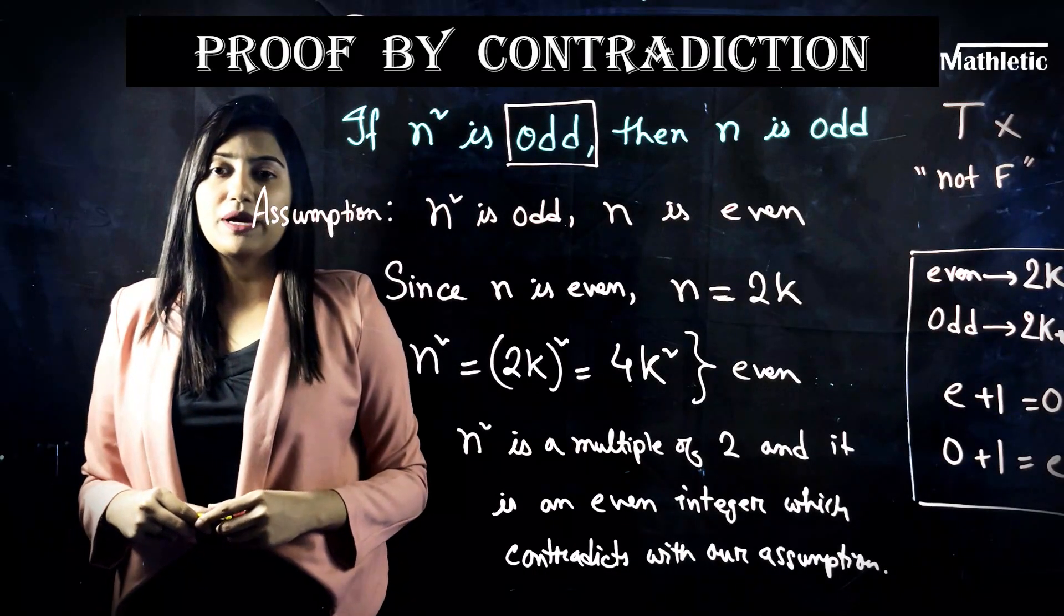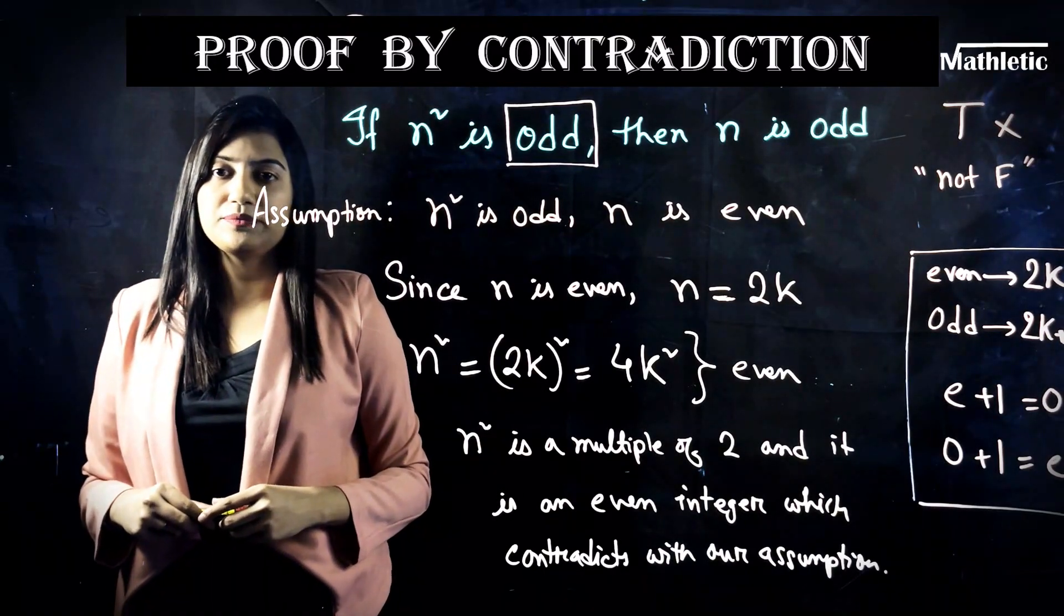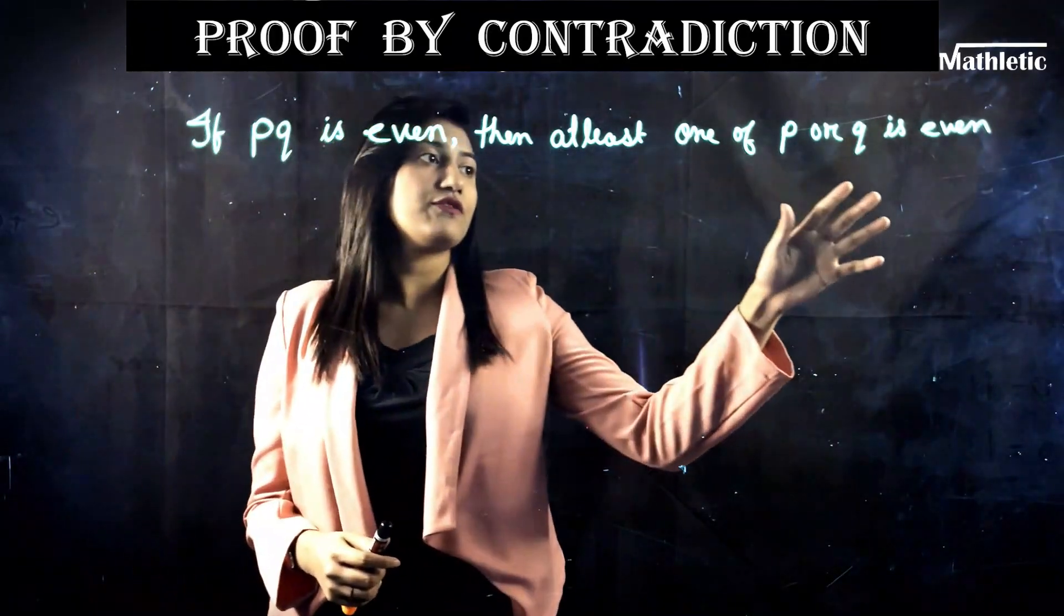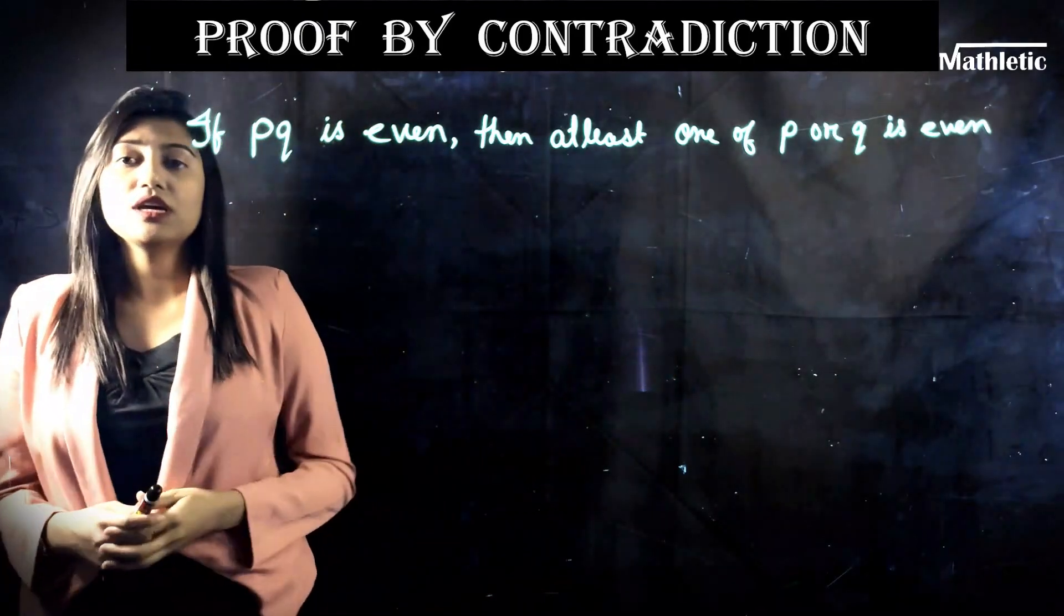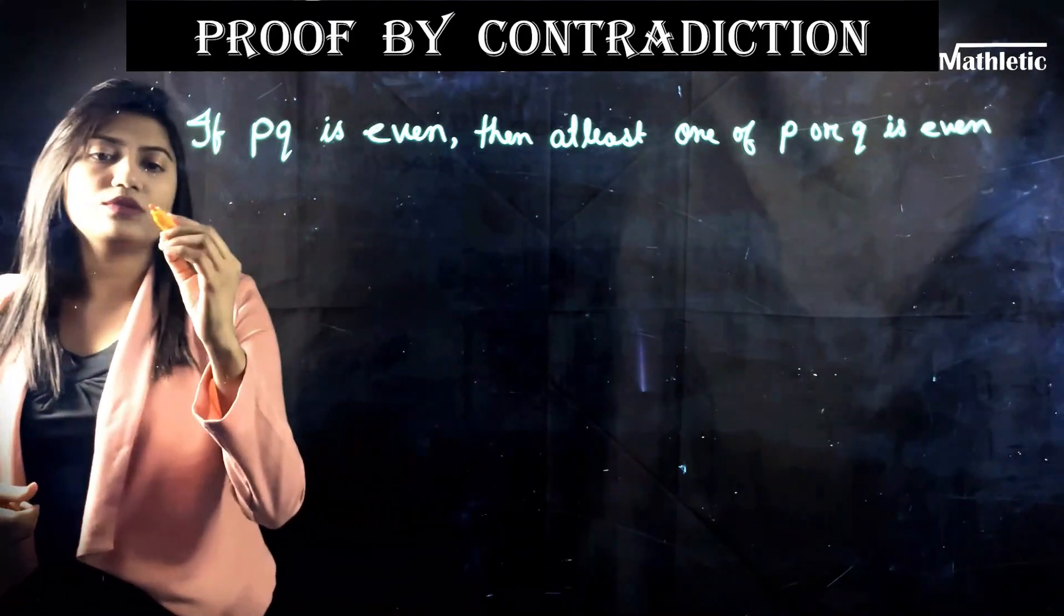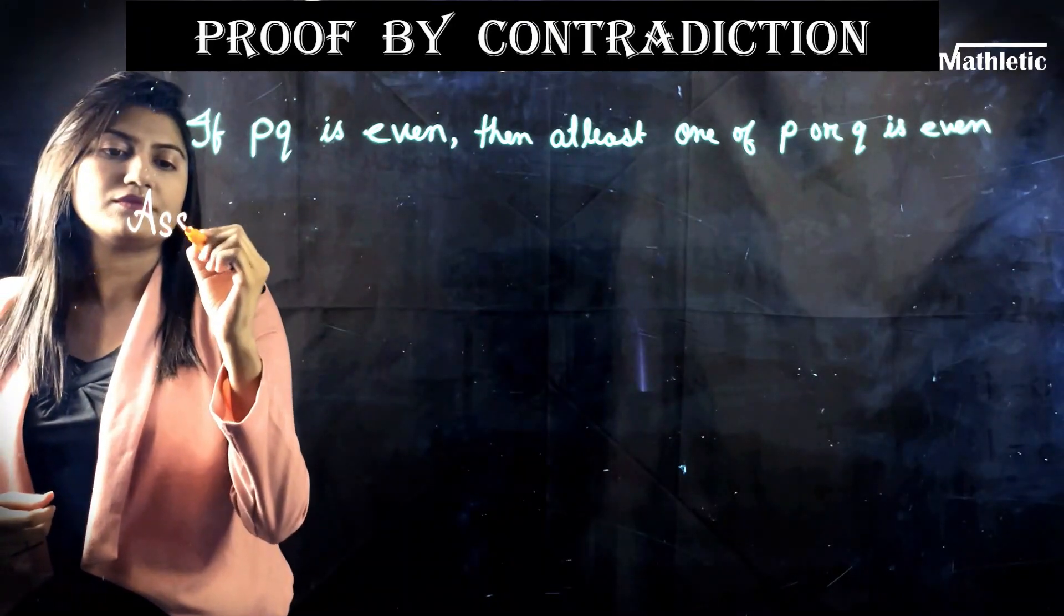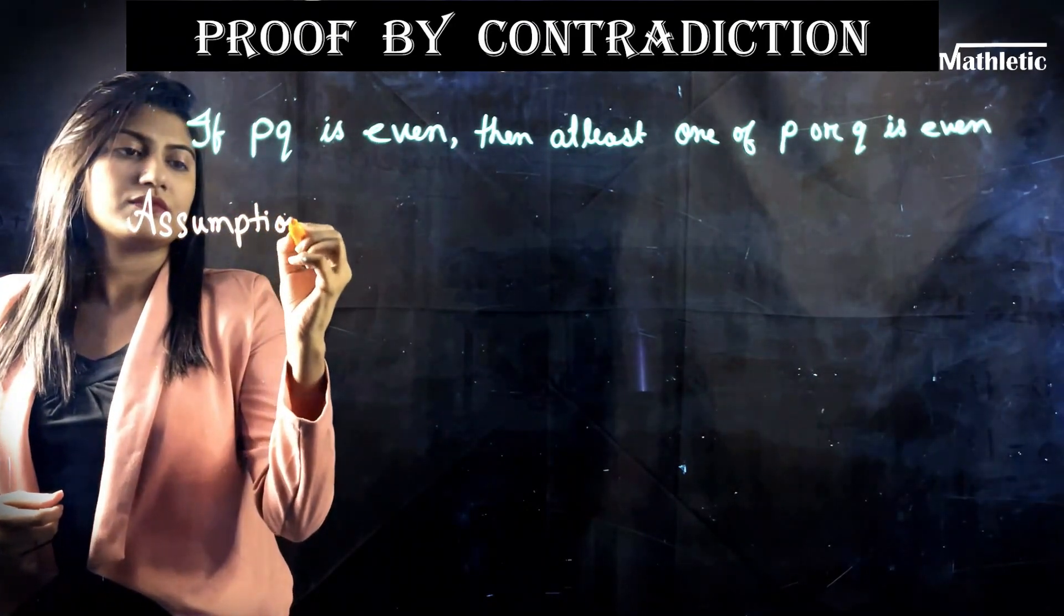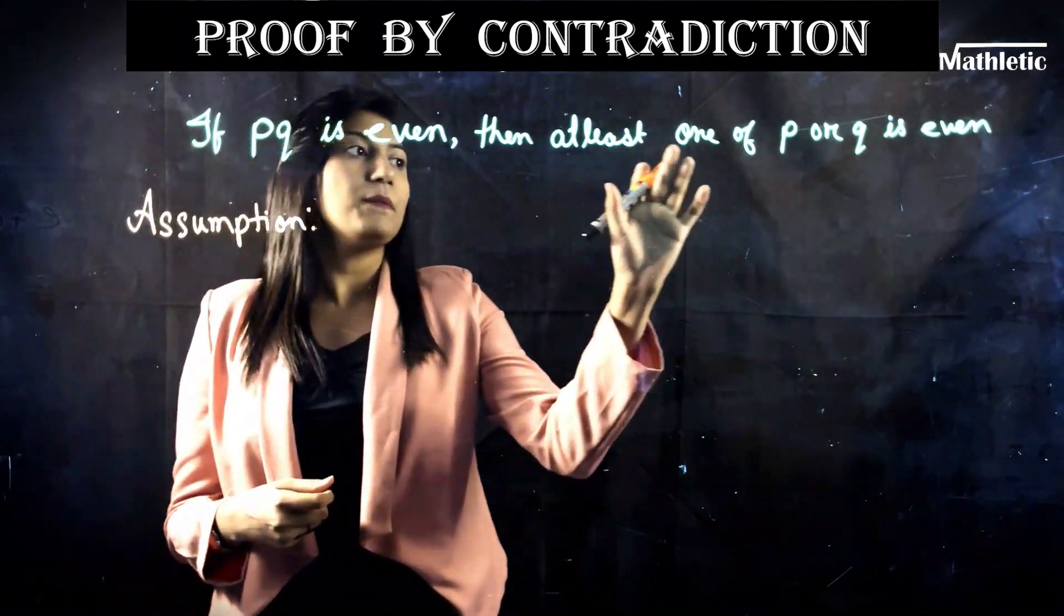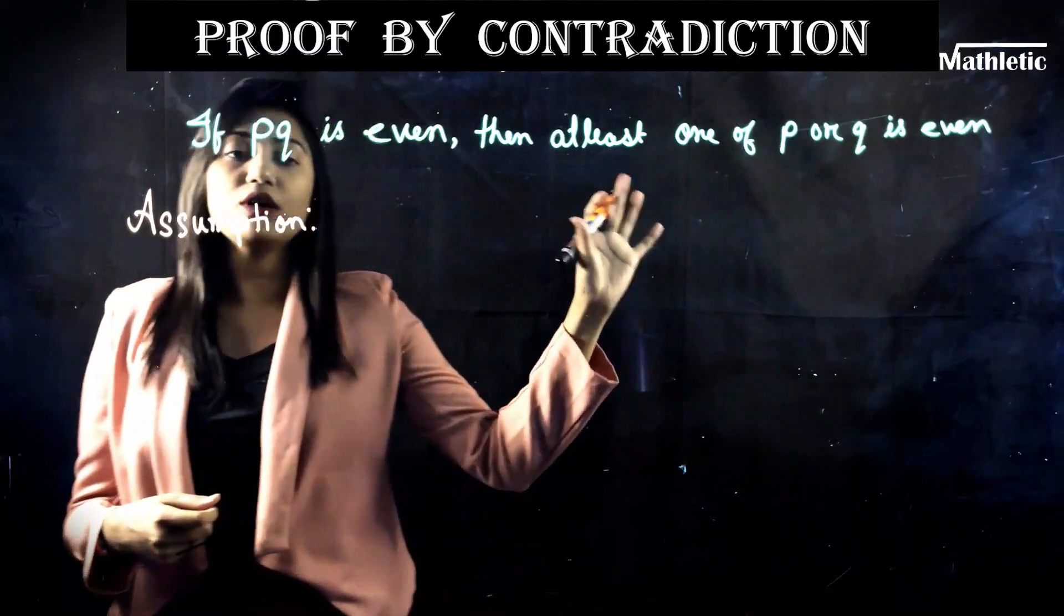So we are done with the first math. Let's start with the second one. Okay. So in this one if pq is even then at least one of p or q has to be even. So the first step is to assume the opposite. Right? So let's start.